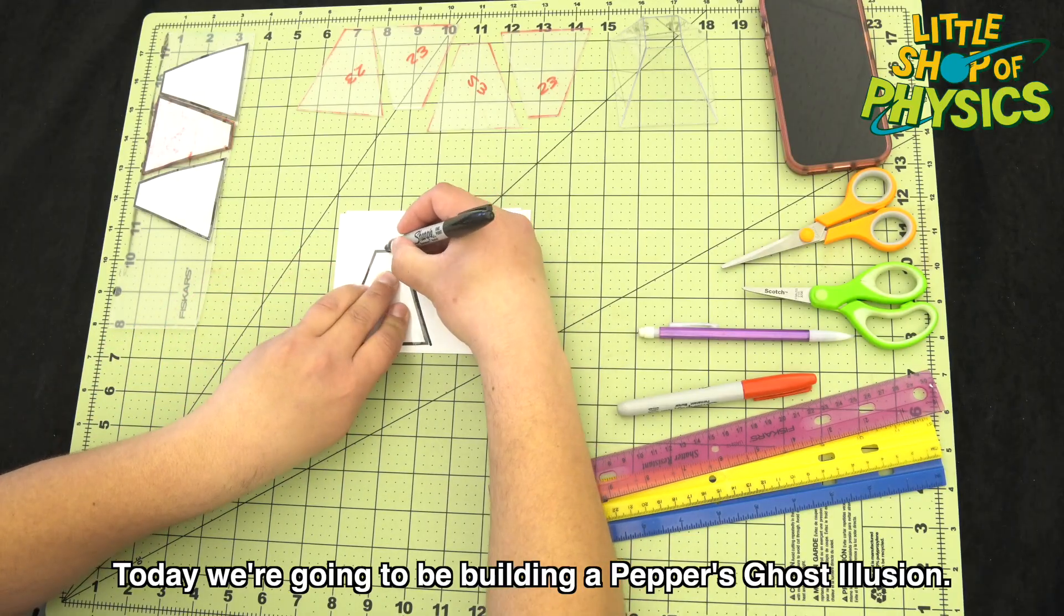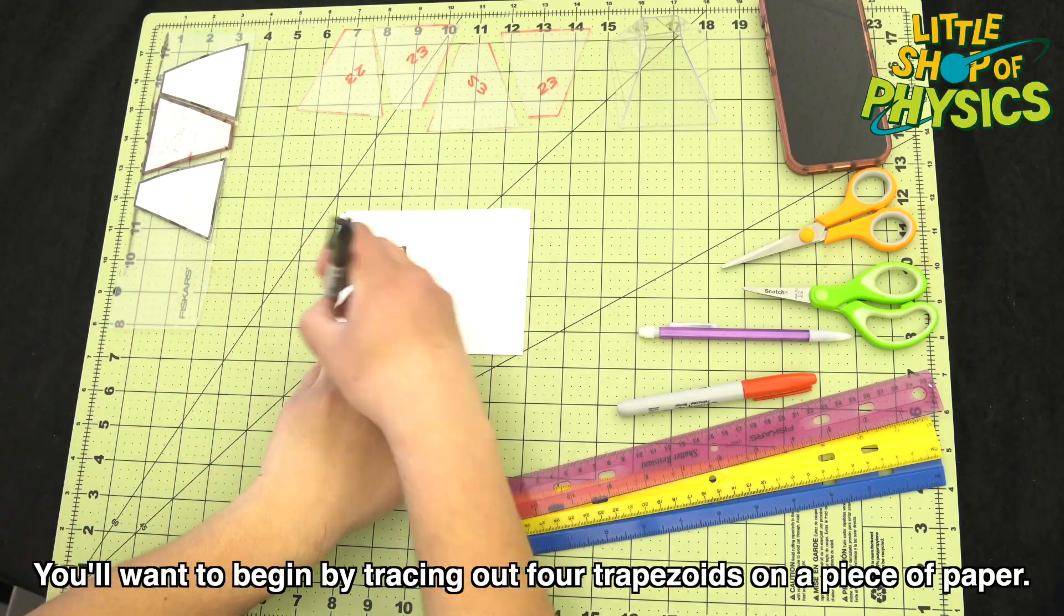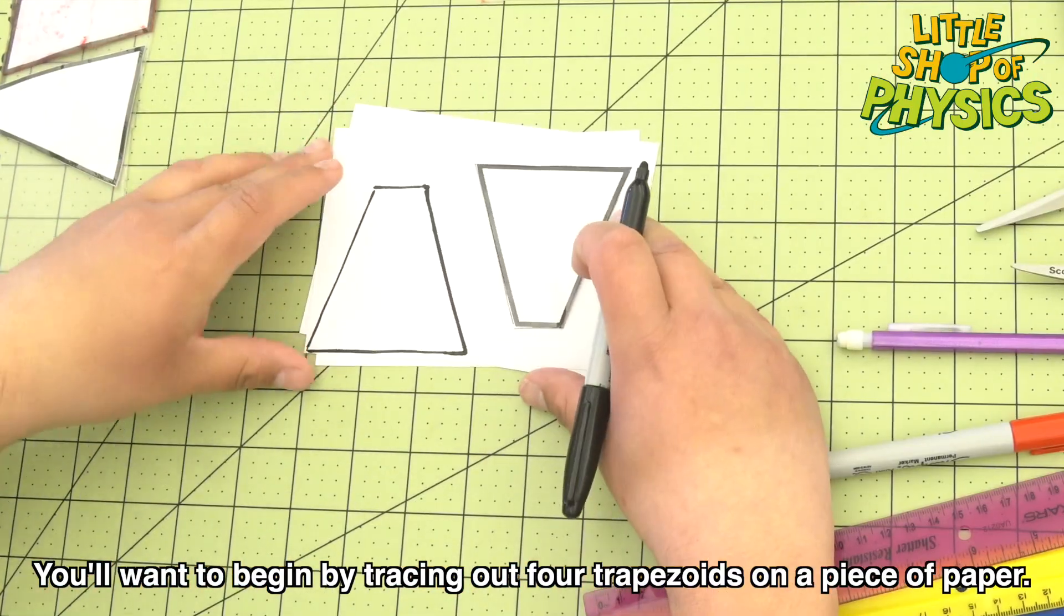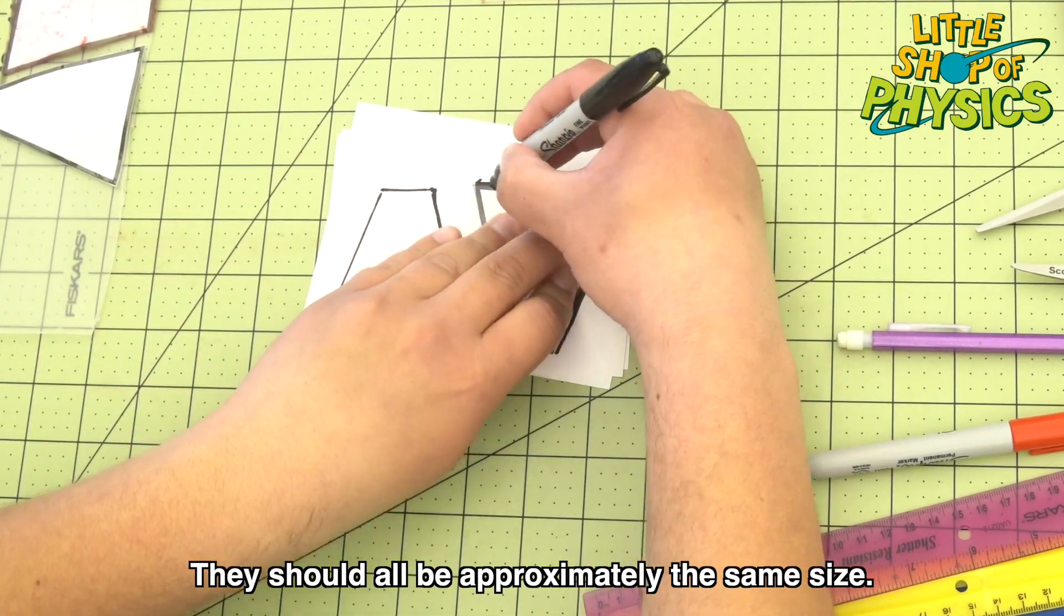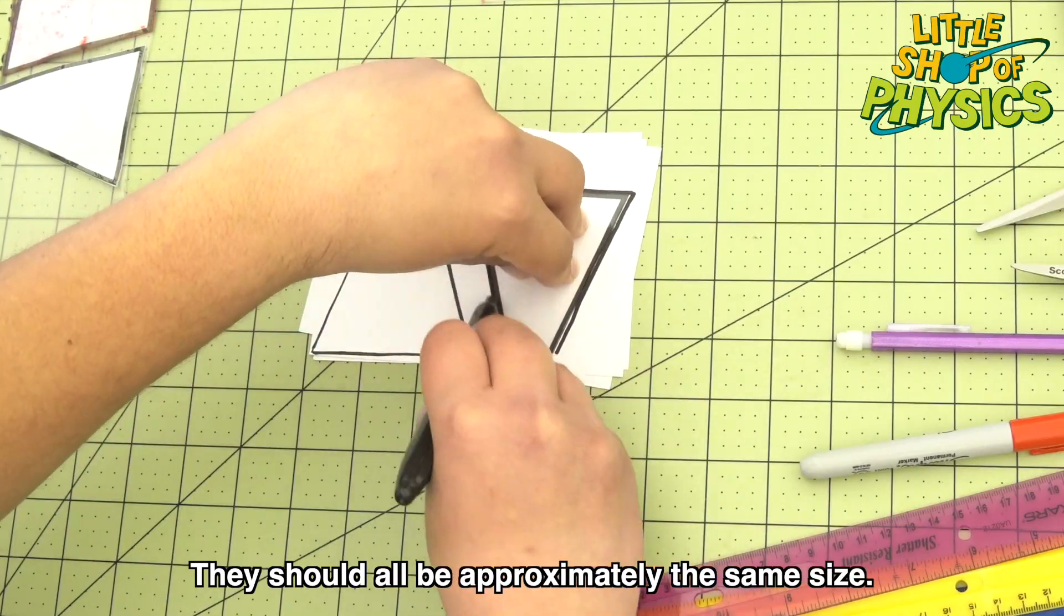Today we're going to be building a Pepper's Ghost Illusion. You'll want to begin by tracing out four trapezoids on a piece of paper. They should all be approximately the same size.